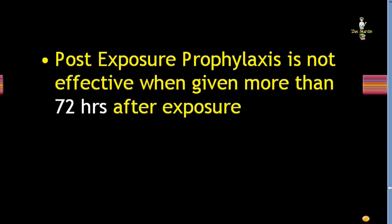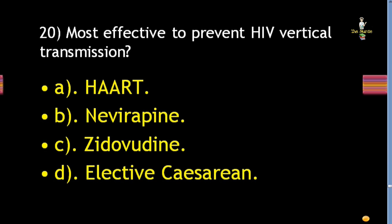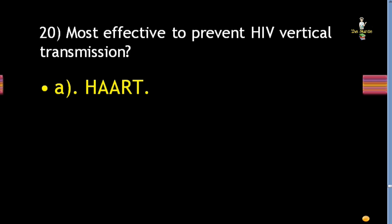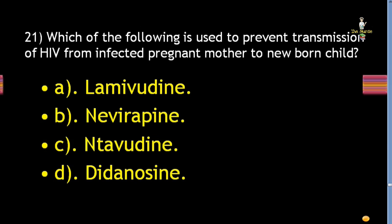Next question: most effective way to prevent HIV vertical transmission — which drug is used to prevent transmission of HIV from an infected pregnant mother to the newborn child? Options: lamivudine, nevirapine, indinavir, or didanosine. Correct answer is nevirapine.